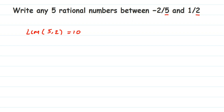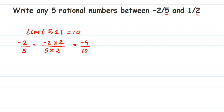Now I'm going to change the denominators to ten — it's like finding an equivalent rational number. For minus two by five, I need to change the denominator from five to ten, so I multiply both numerator and denominator by two: minus two times two gives minus four by ten. For one by two, I multiply by five to get ten in the denominator: one times five gives five by ten.